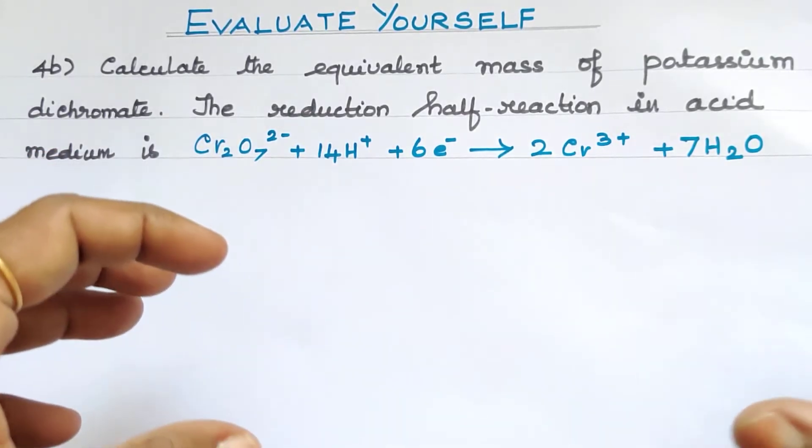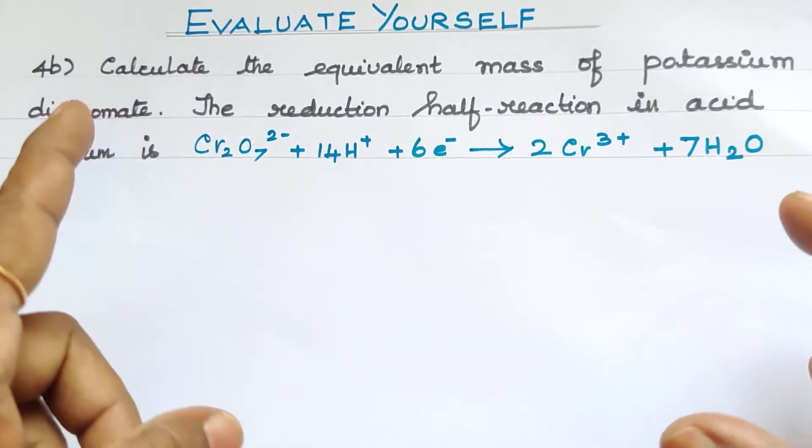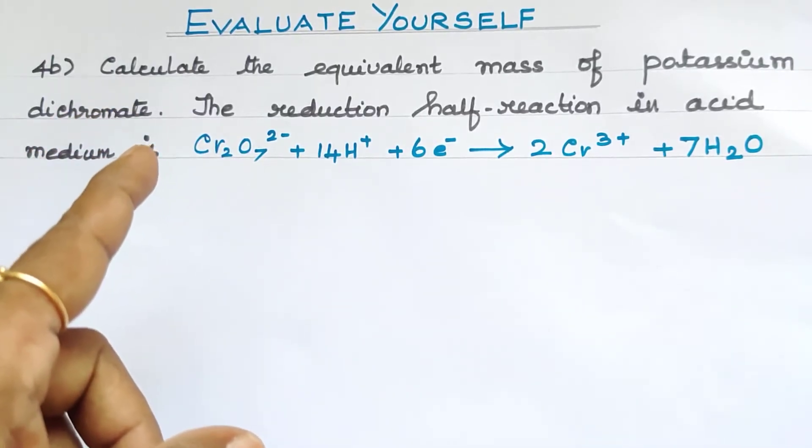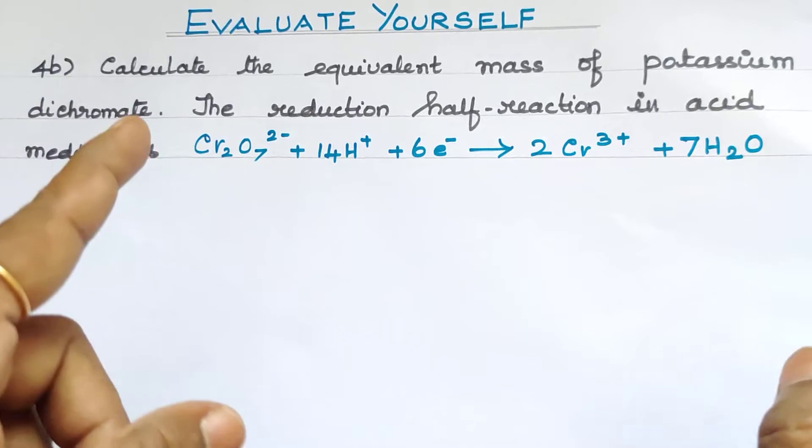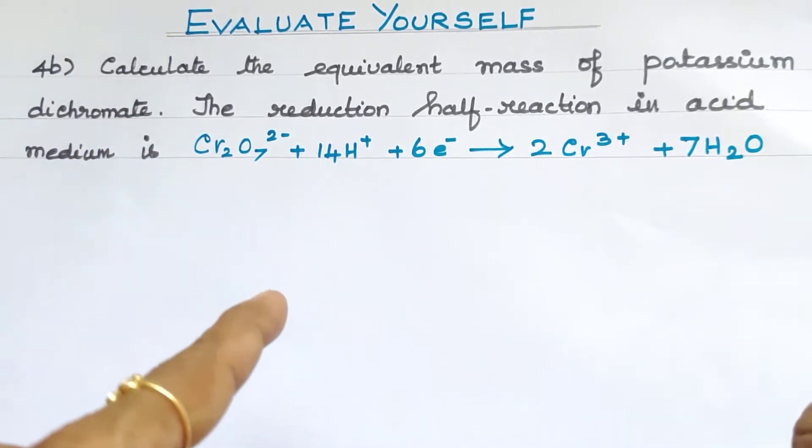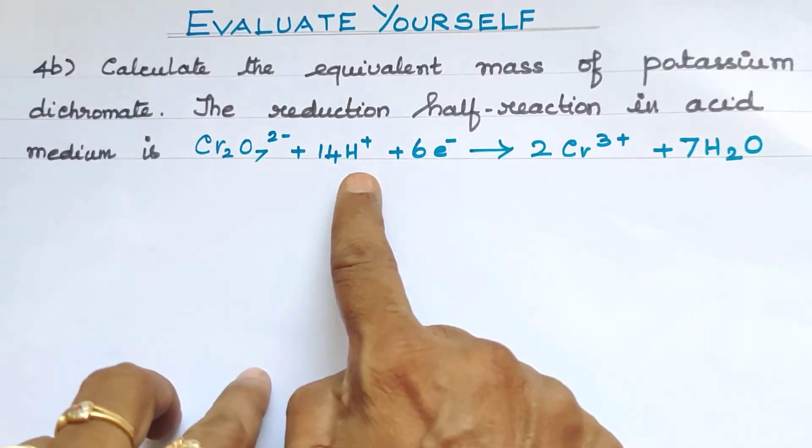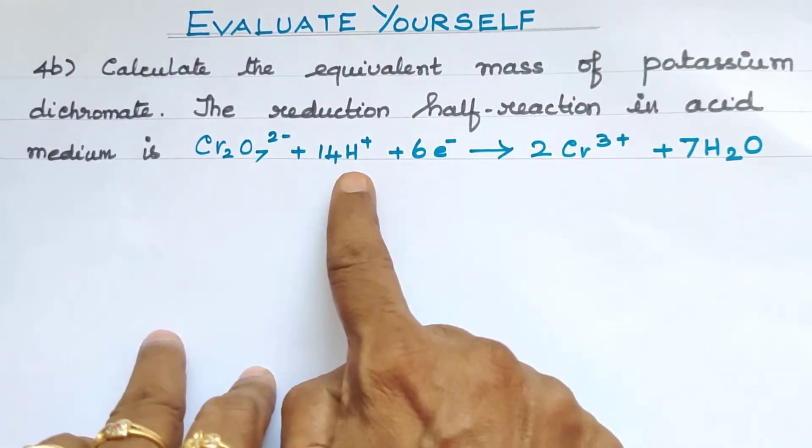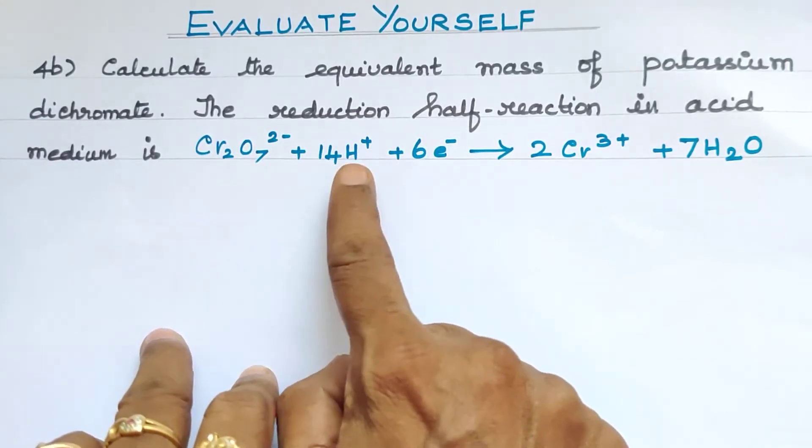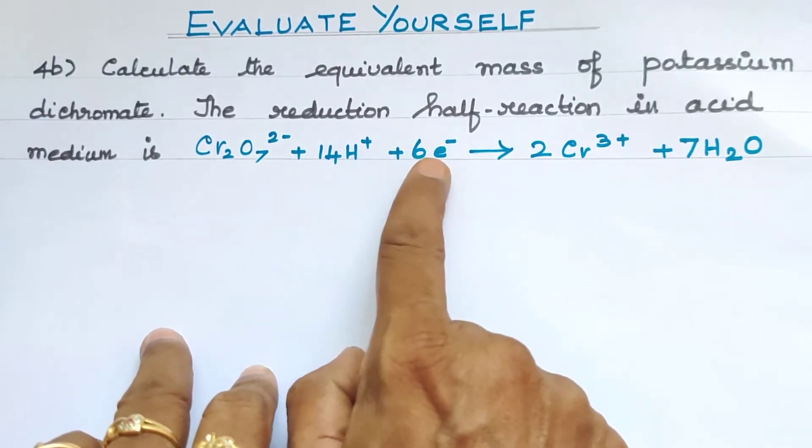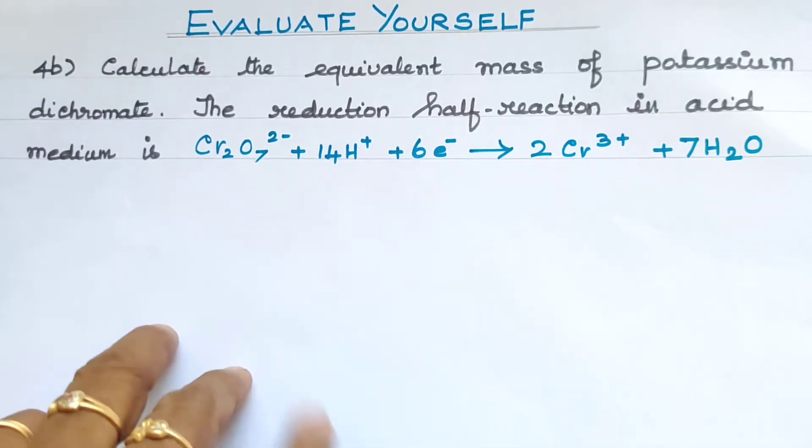So this is a reduction half reaction. Let's look at the equation. The equation has H+, that's why we represent it in H+. Six electrons. This is potassium dichromate.